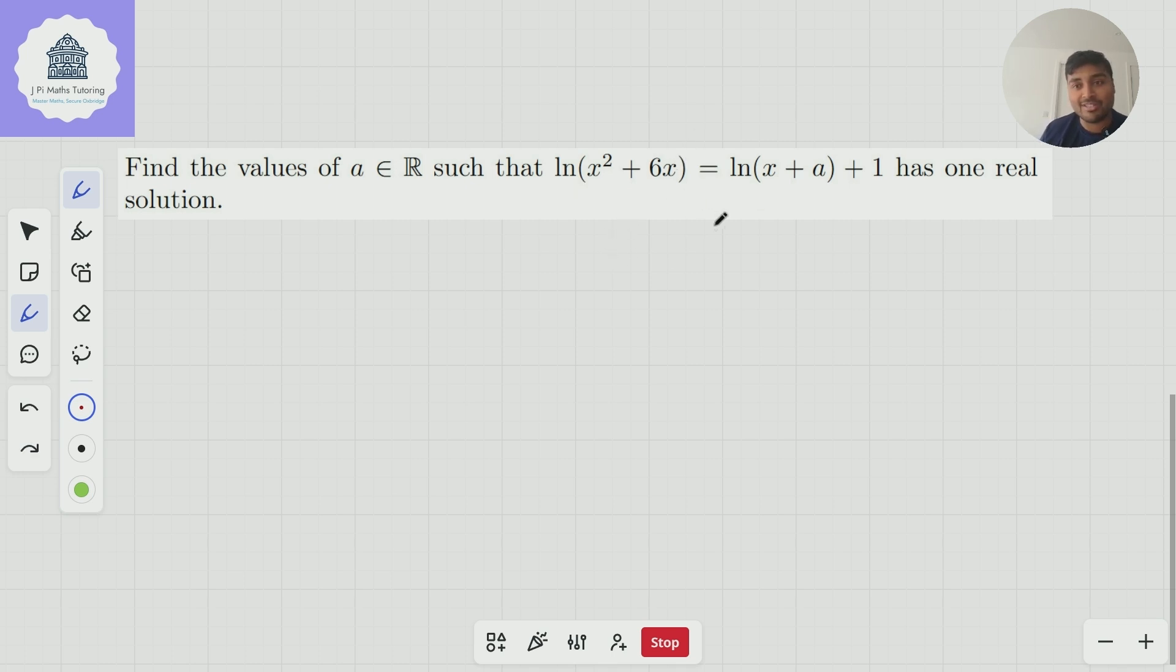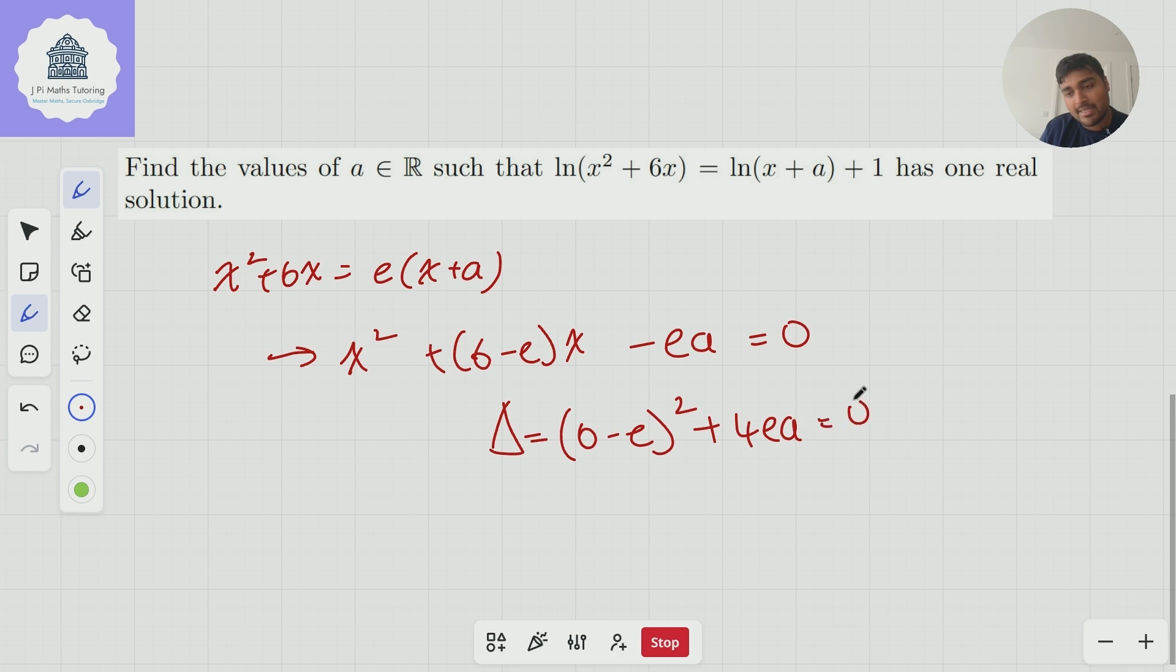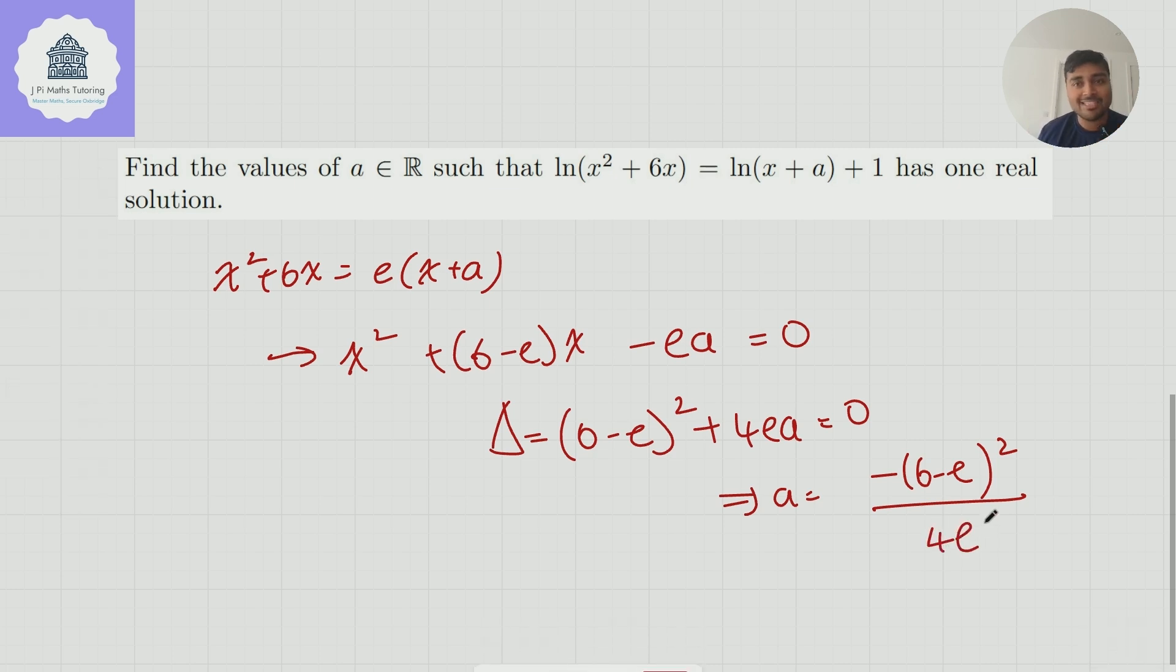I'm going to show you the way not to do this first. Simplify this and get x² + 6x = e(x + a). Turn this into a quadratic x² + (6 - e)x - ea = 0. And then just because it's one real solution discriminant make it equal to zero. And so you get (6 - e)² + 4ea = 0. And so that means that a is equal to -(6 - e)²/4e. Now you might think that that's correct but it's not.